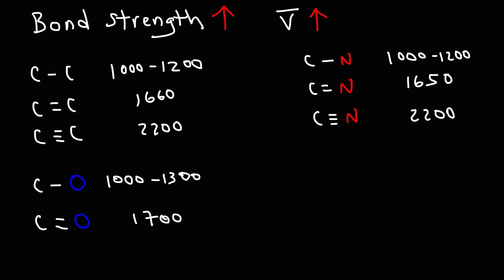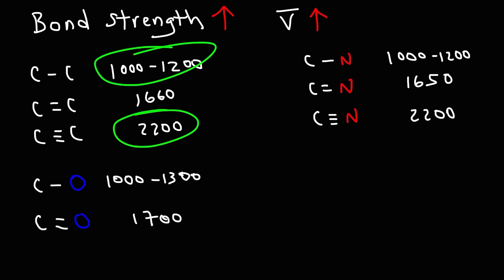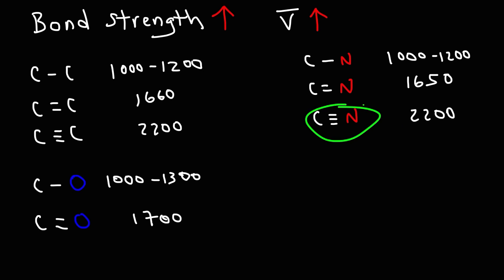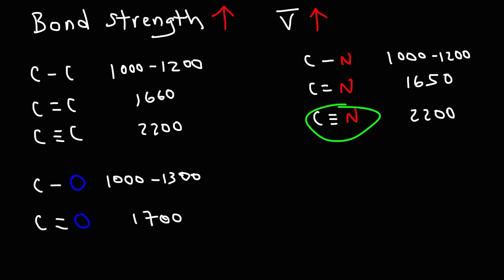The next relationship is between bond strength and wavenumber. As the strength of a bond increases, the wavenumber goes up. Triple bonds are stronger than double bonds, and double bonds are stronger than single bonds, so triple bonds have higher wavenumbers. We can see this with alkynes relative to alkanes, nitriles versus amines, and carbonyls versus a C–O single bond stretch. More energy is required to stretch a triple bond than a single bond, and since wavenumber and energy are directly related, triple bonds show up at higher wavenumbers in the IR spectrum.